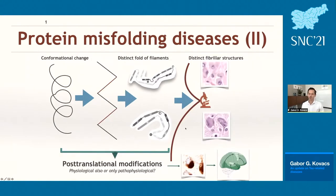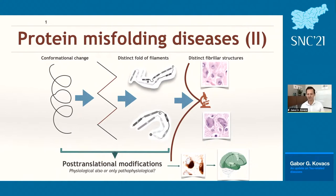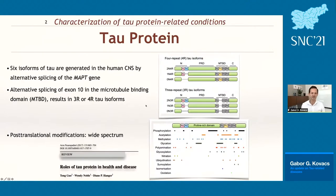As a neuropathologist, distinct forms of filaments lead to distinct fibrillar structures visible in the microscope, seen with classical methods like hematoxylin-eosin or silver staining, but we use antibodies and immunohistochemistry because there are many post-translational modifications that underlie the different subtypes of disease. The tau protein has six isoforms generated in the human CNS by alternative splicing of the MAPT gene: three have four repeats (4R) and three have three repeats (3R).